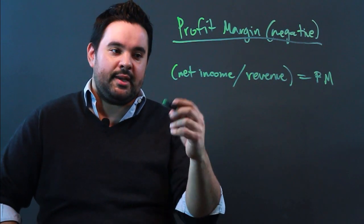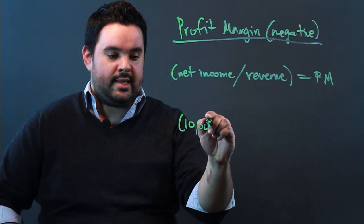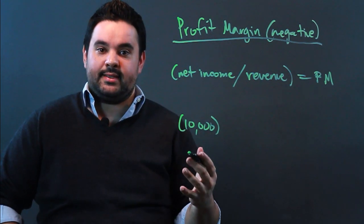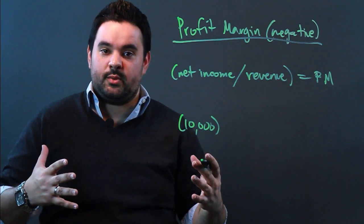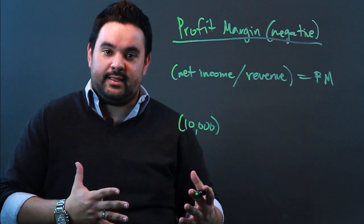So let's say your net income on something was negative $10,000. Now why is that? Well, you sold $100,000 worth of product, but it cost you $110,000 in order to actually sell that.